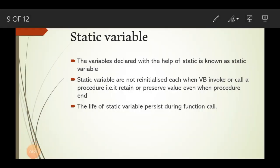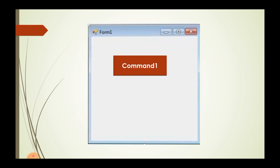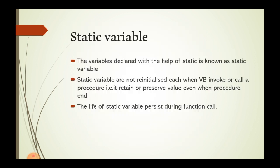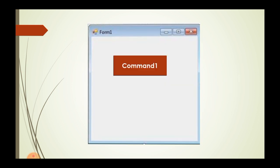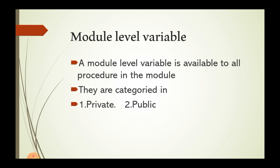For a static variable example, the code is similar: Private Sub Command1_Click() — Static x As Integer, x = x + 1, Print x, End Sub. But the output is different from a local variable because the static variable is not reinitialized. So the output of this program is 1, 2, 3 on successive clicks.